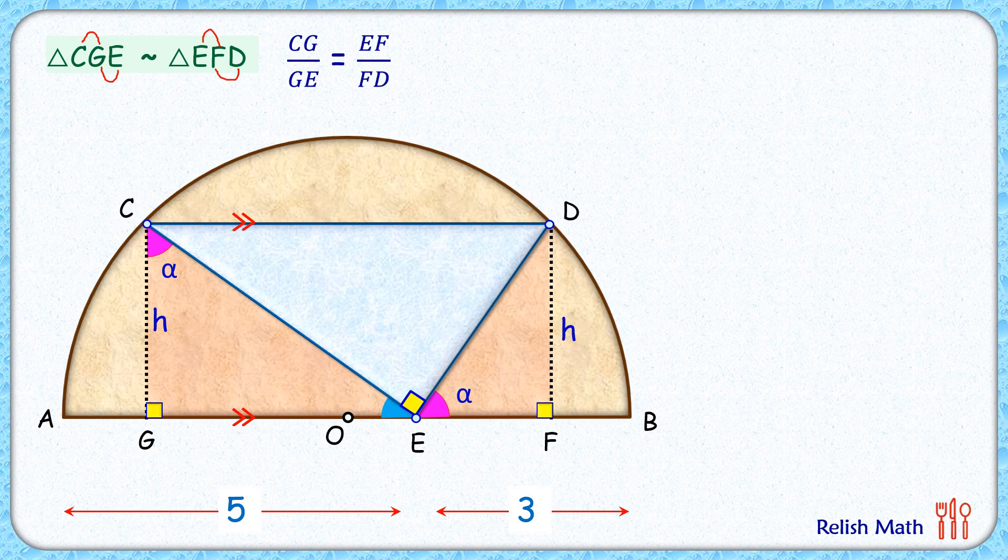Now here by symmetry we can say that O is midpoint of GF. So if we'll assume the length GO as X centimeter, then the length OF will also be X centimeter. Also if we'll see the diameter AB is nothing but 5 plus 3, that is 8 centimeter, and thus the radius, that is AO, is 4 centimeter. And thus length OE will be 5 minus 4, that is 1 centimeter.